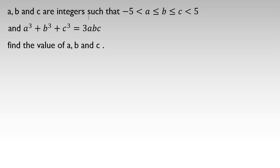a, b, and c are integers such that negative 5 less than a less than or equal to b less than or equal to c less than 5, and a cubed plus b cubed plus c cubed equals 3abc. Find the value of a, b, and c.